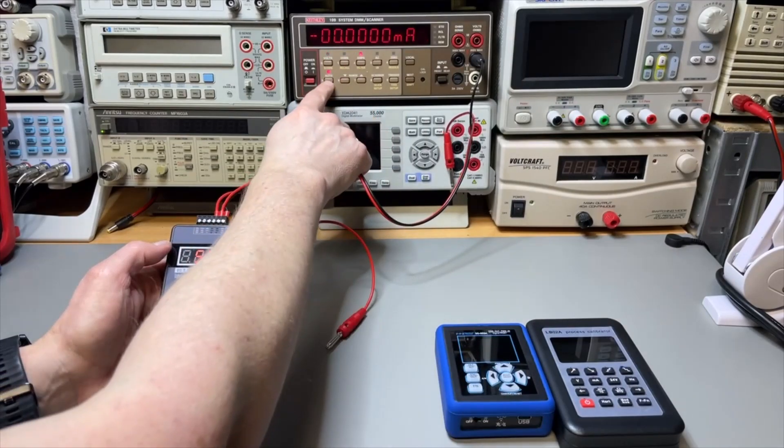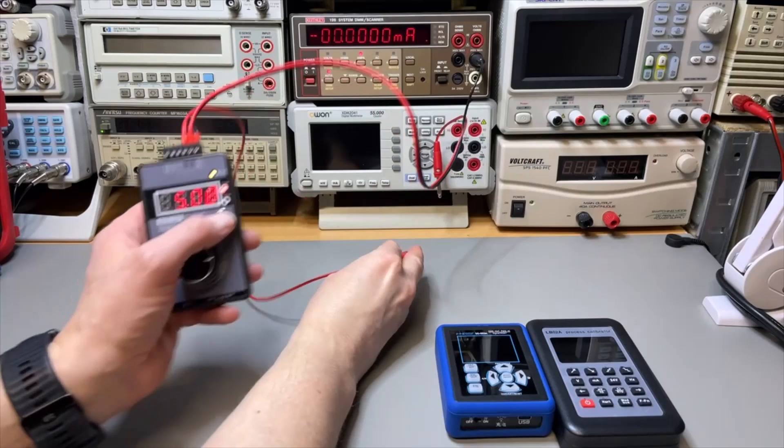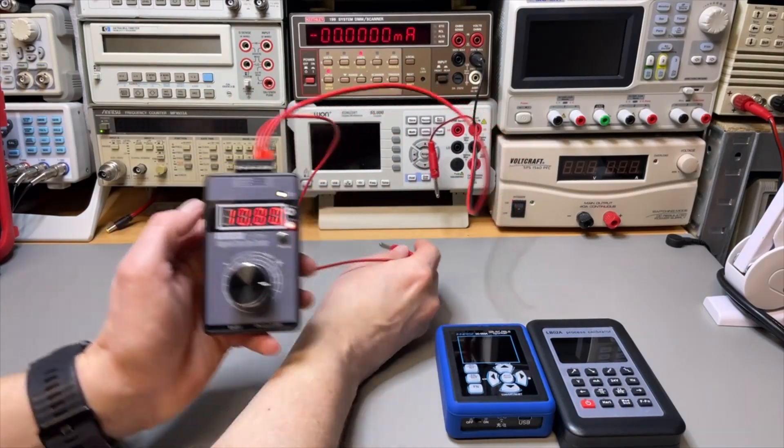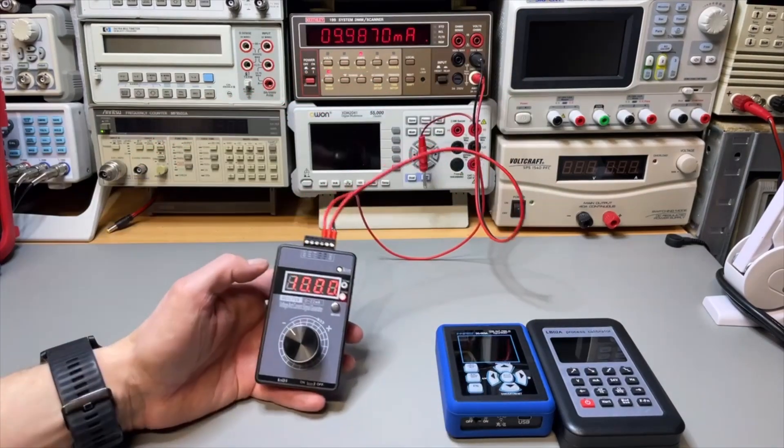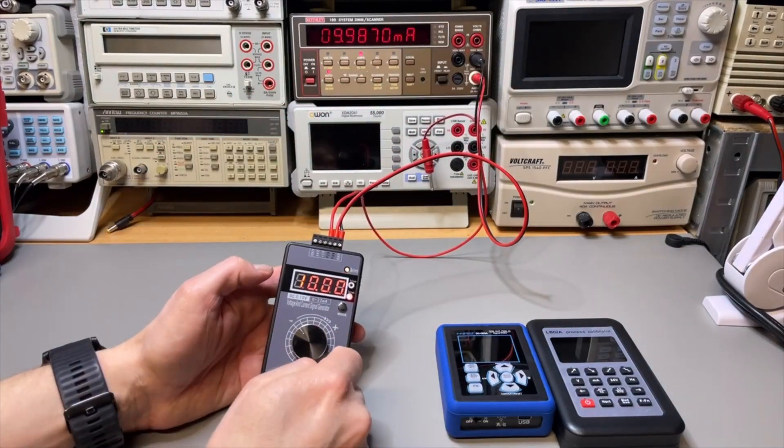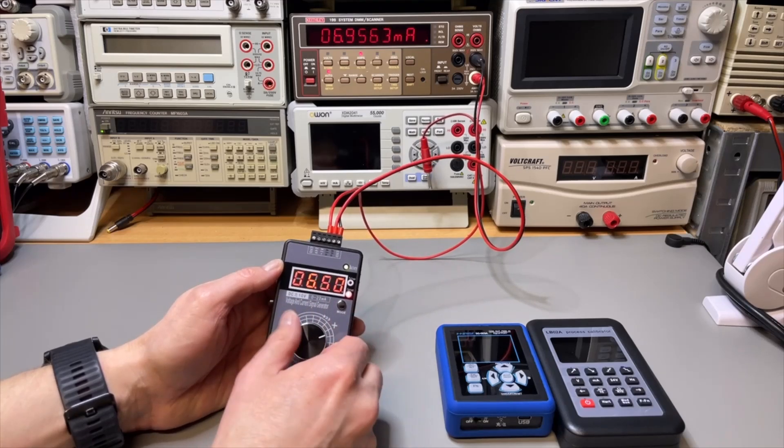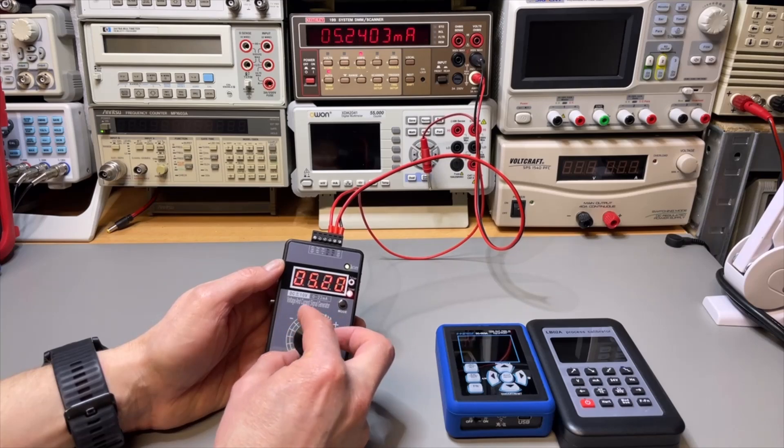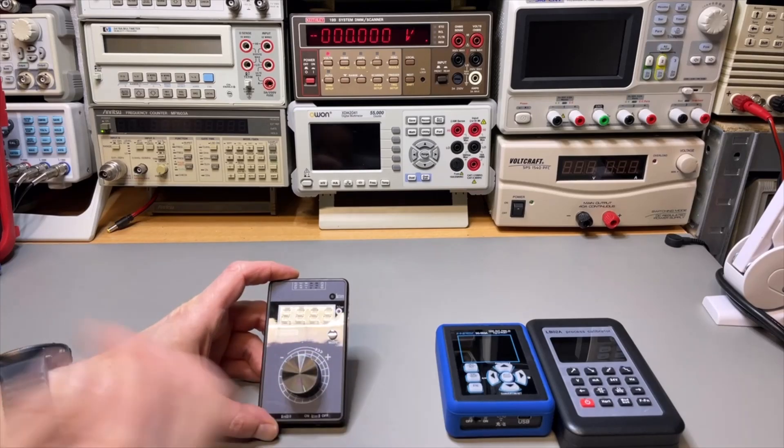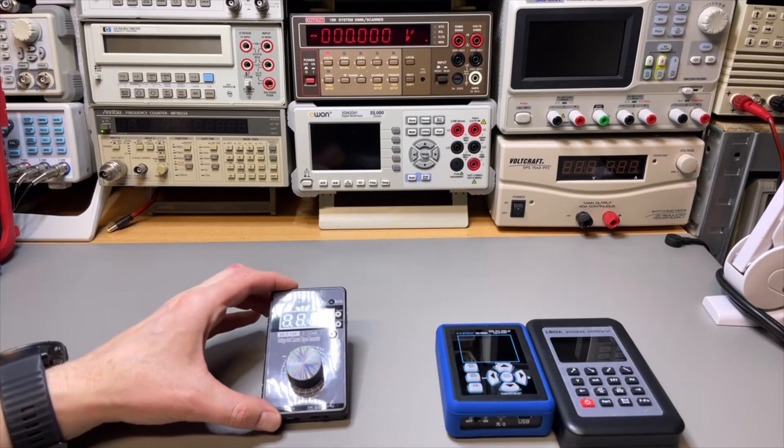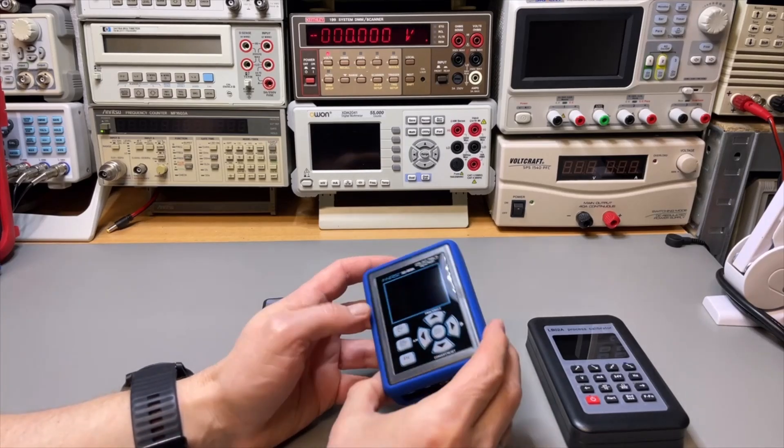It can also do current. If we do that we need to switch it over with the mode button. Let's set it to 10 milliamps and here we are. That's more or less 10 milliamps. You can adjust the current so you can do your basic checks. That is what you get for 25 euros. This one is like 45 and it's also with battery.